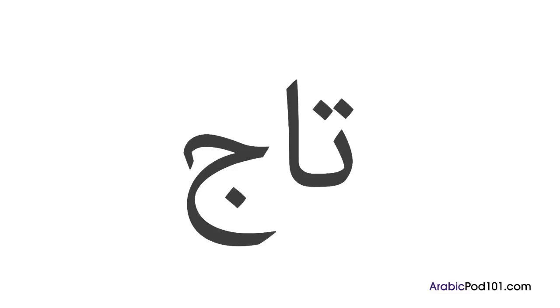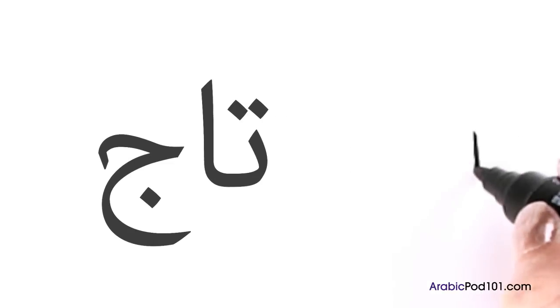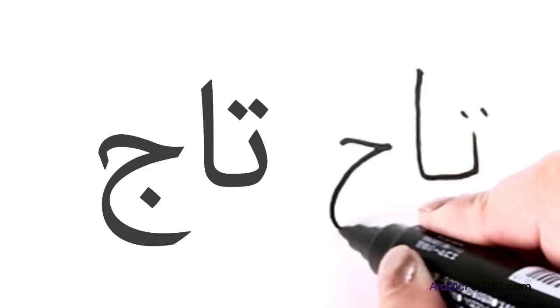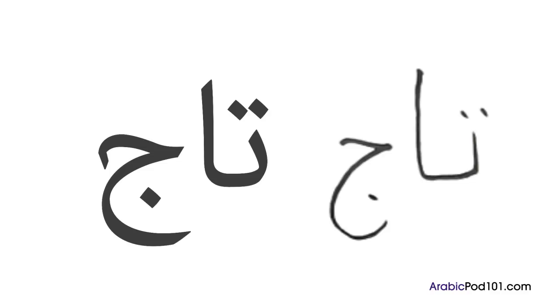Now let's try writing it. Taj. First, write the Ta, the boat connected to the Alif, the two dots, then the Jim in the isolated form. Nice work!